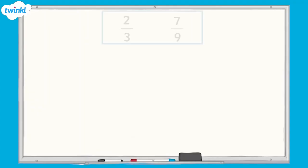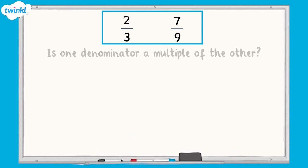To recap equivalent fractions, you can check out our equivalent fractions video on the Twinkle website. Here we have a pair of fractions: 2 thirds and 7 ninths. When comparing a pair of fractions, we can ask the question: is one denominator a multiple of the other?